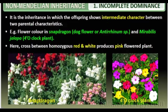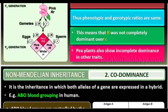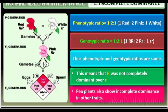Let us read about the phenotypic and genotypic ratio. If we take a monohybrid cross, our phenotypic ratio is 3:1 and the genotypic ratio is 1:2:1. But in the case of incomplete dominance, we get the phenotypic as well as the genotypic ratio which is the same. Phenotypes are also 3 types and genotypes are also 3 types.